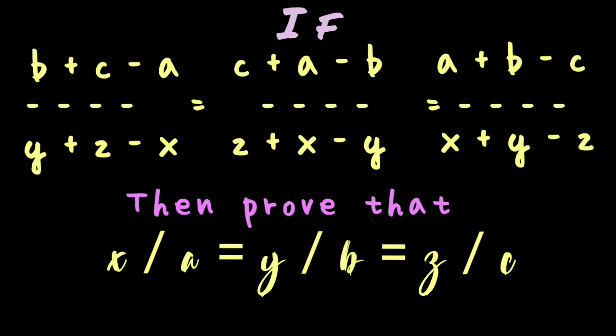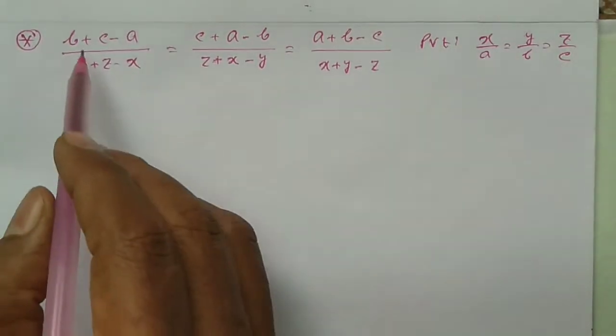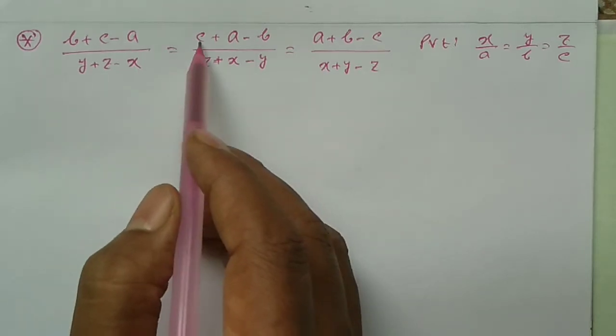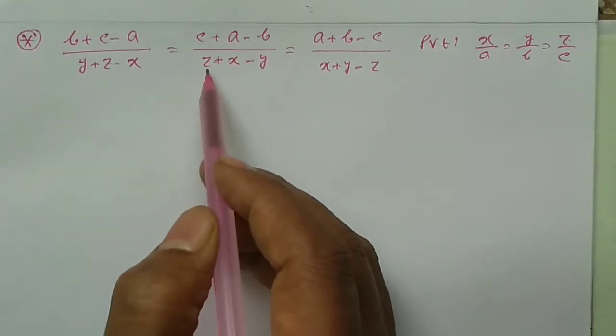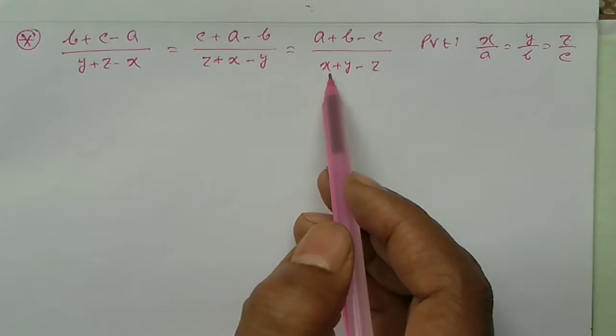If (B plus C minus A) by (Y plus Z minus X) equals (C plus A minus B) by (Z plus X minus Y) equals (A plus B minus C) by (X plus Y minus Z), then prove that X by A equals Y by B equals Z by C.